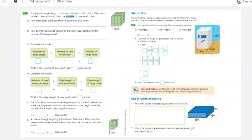This is Module 13, Lesson 2. It's called Find Volume of Rectangular Prisms.